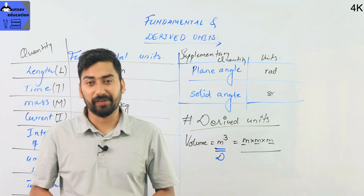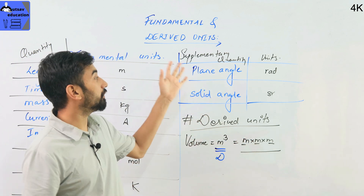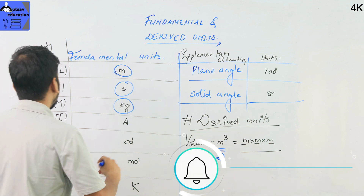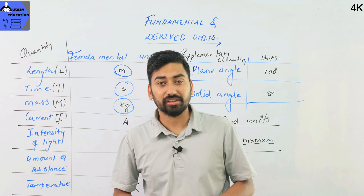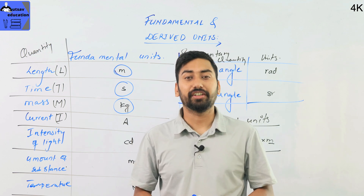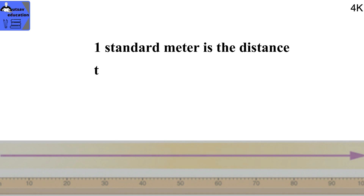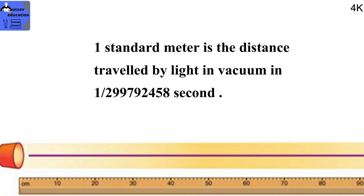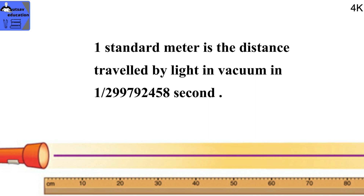We will consider dimensional analysis in the next video and revisit this. So this is about fundamental units, derived units, and supplementary units. The basis units are mass, length, and time. The standard definition covers what is a meter, what is a kilogram, and what is a second.